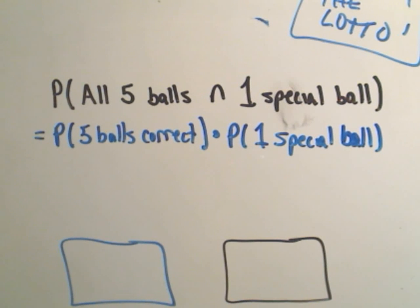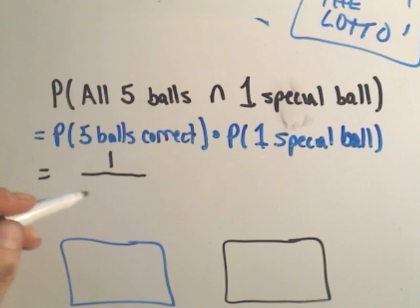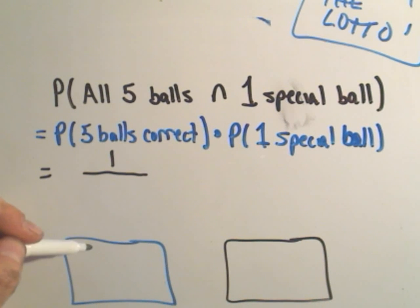Okay, so in this case, this is where our counting techniques come into play here. So, the probability of us getting the first five balls correctly, well, we only have one guess. What we need to do, though, is count the total number of ways that those five balls could show up.